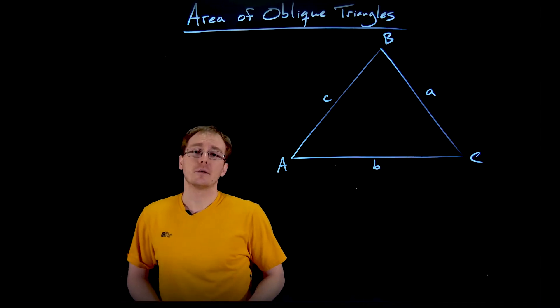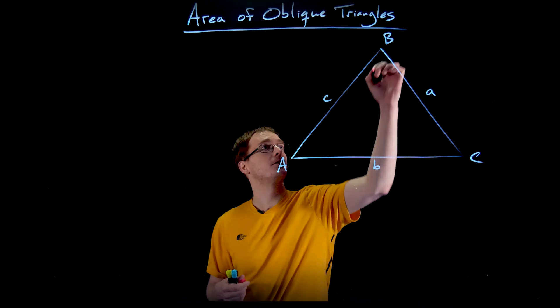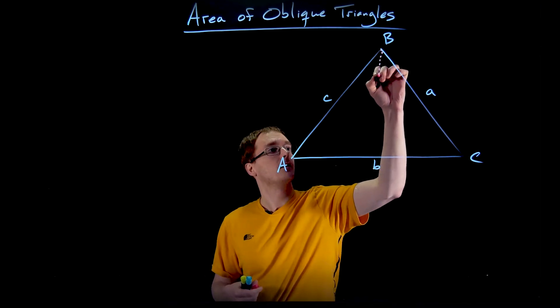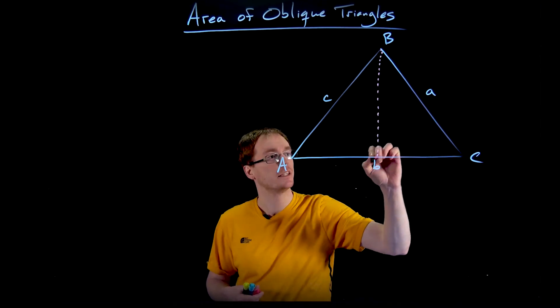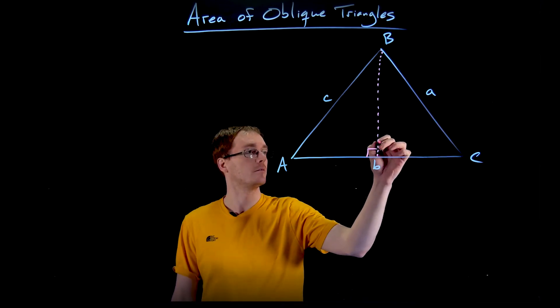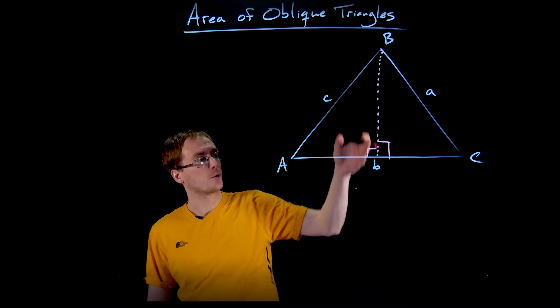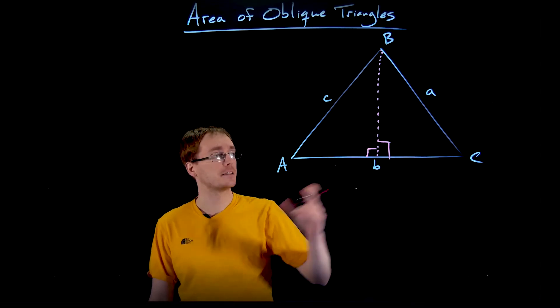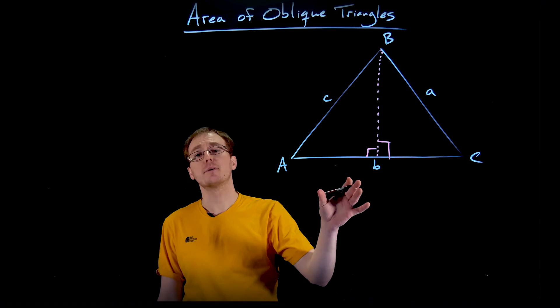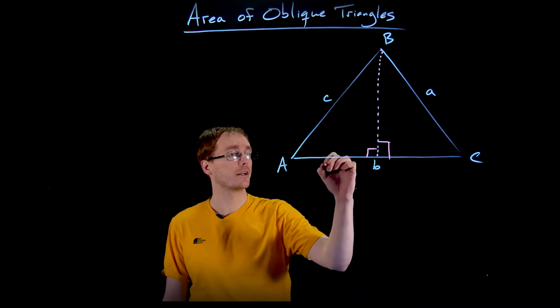The way we initially start solving basically all of these oblique triangle problems is by breaking it up into pieces where each of those individual pieces is a small right triangle. So using this perpendicular bisector or this vertical line coming down from angle B and attaching a side length B, we can now break our large oblique triangle into two smaller right triangles.